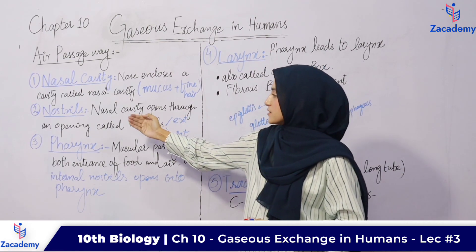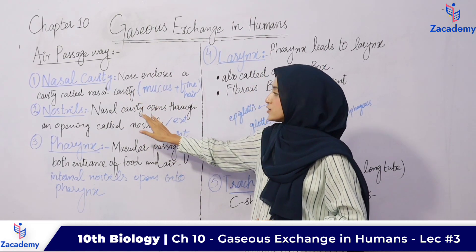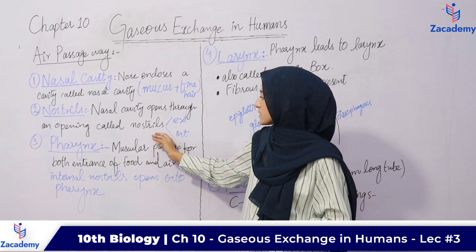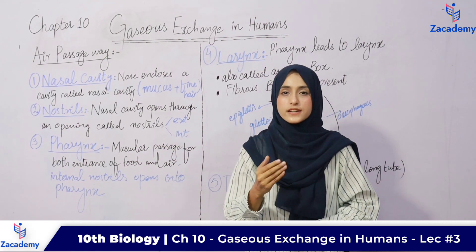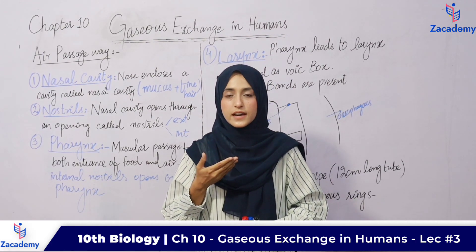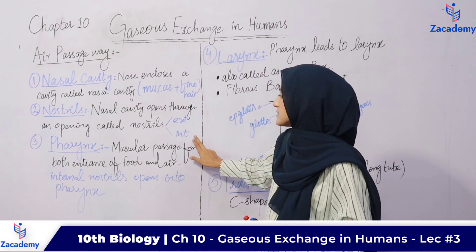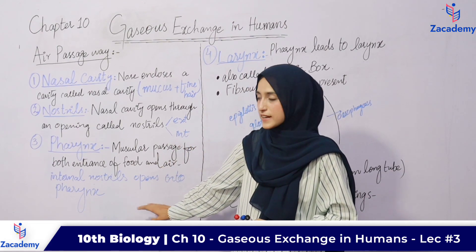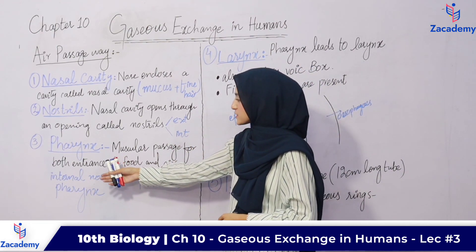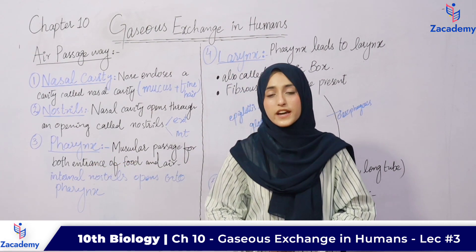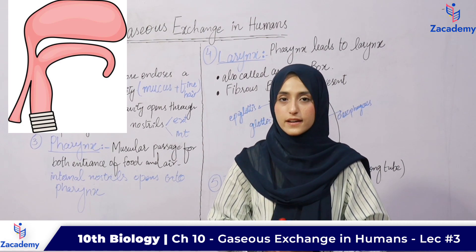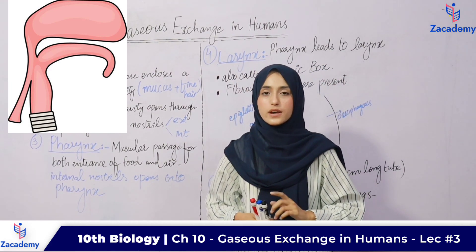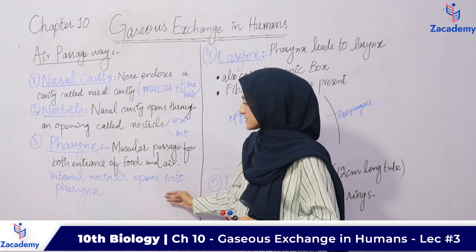Next we have nostrils. The nasal cavity opens into the nostrils. There are two types: external nostrils and internal nostrils. External nostrils are where we intake air from outside the environment. Internal nostrils open next into the pharynx. Pharynx is a common pathway, but at one time only one thing can enter.